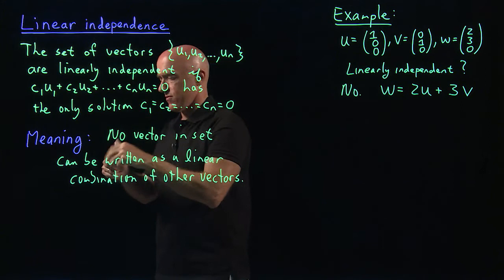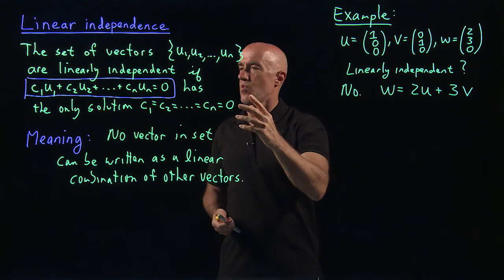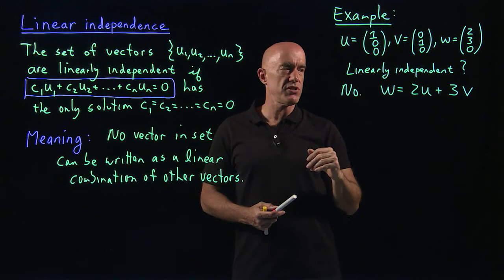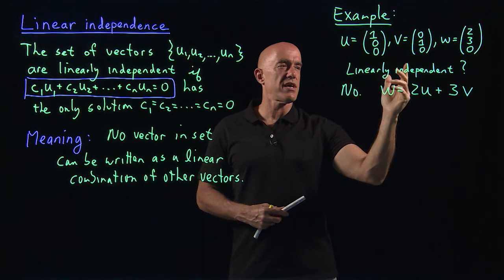And if we go back to this equation, the definition of linear independence, we can go ahead and put U, V, and W on one side of the equation and then set it equal to 0. And we have coefficients that are non-zero that satisfy this equation. So, that's an example of three vectors that are not linearly independent.